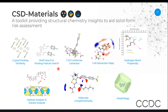There is a motif search and packing feature search. This allows you to define three-dimensional arrangements of atoms or molecules and then search for that particular three-dimensional arrangement. We see here that this stacking of rings with chlorine atoms has been defined, and you can search for other structures which contain this particular stacked set of fragments.